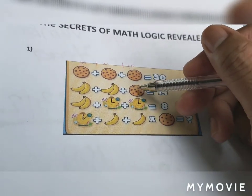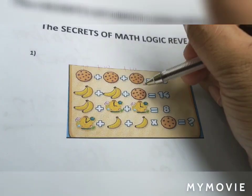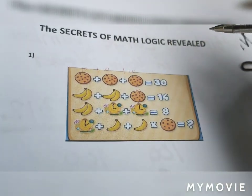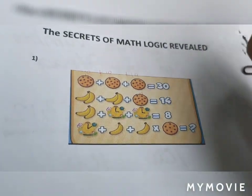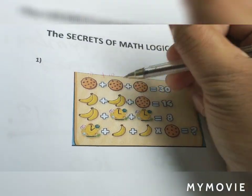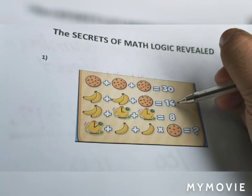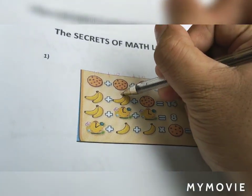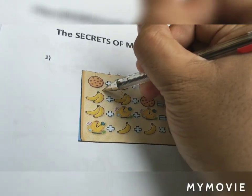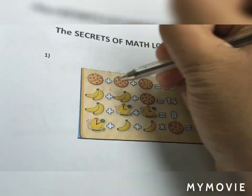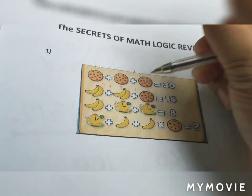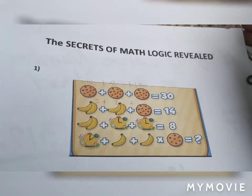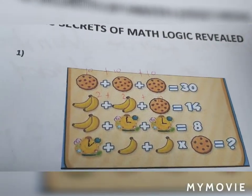For the second equation, the value for this one is 10. How about the two bananas? This is to make it 14, so this is 2 plus 2 plus 10 is equal to 14.